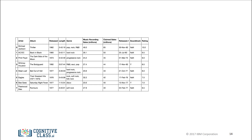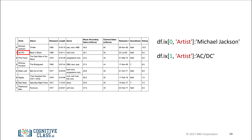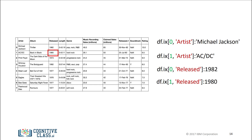When you use the name of the column as well, you can access the first row of the column named artist, the second row of the column named artist, the first row of the column named released, and the second row of the column named released.